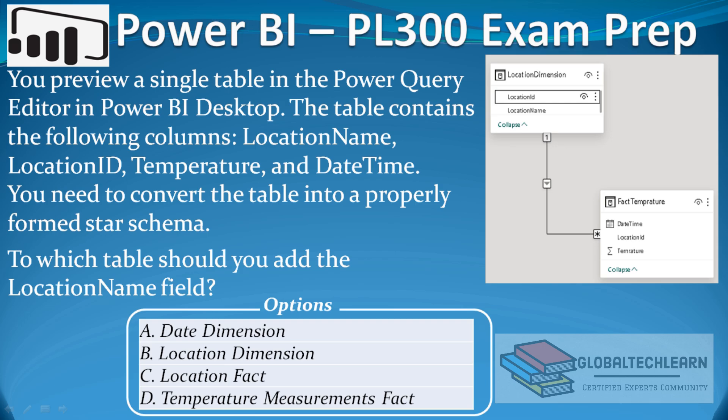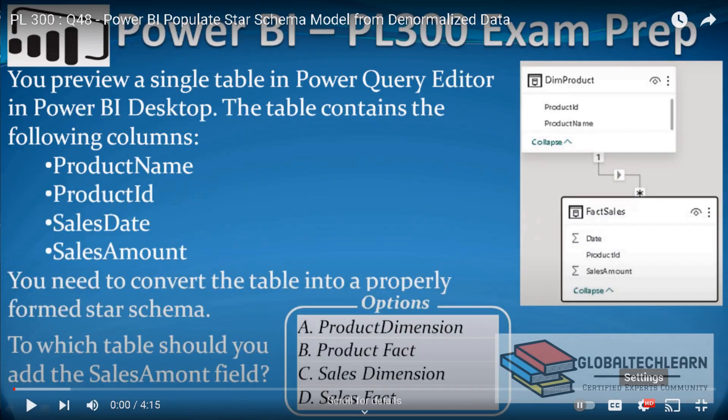To which table should you add the location name field? We have four columns in the given data table, and we have to move the location name field to another table. The answer options are: date dimension, location dimension, location fact, and temperature measurement facts.